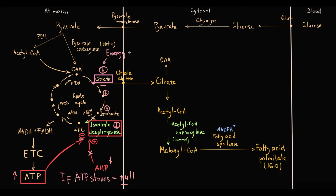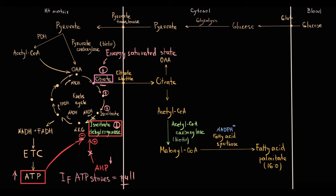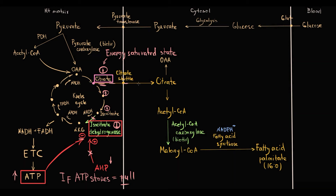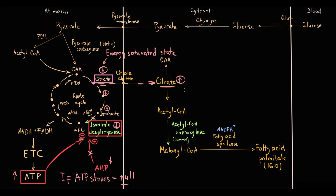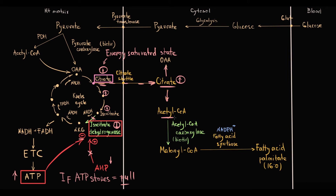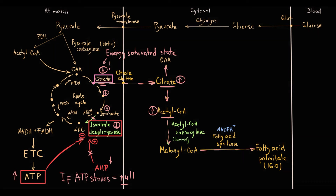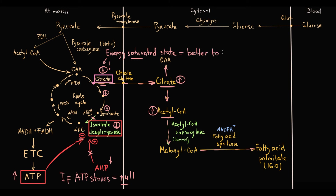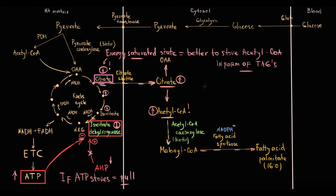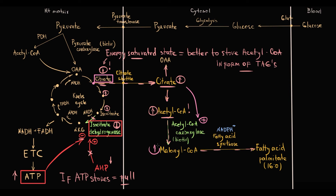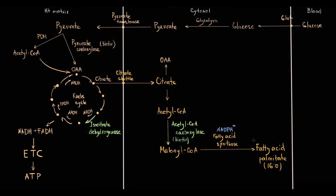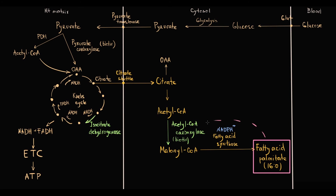High citrate level in the mitochondria is therefore a marker of the energy-saturated state. This accumulated citrate is transported through the citrate shuttle from mitochondria into the cytosol, where it is cleaved into oxaloacetate and acetyl-CoA, which is then used in fatty acid synthesis. Increasing citrate is essentially a sign that energy stores are full, so it is wiser to store acetyl-CoA as triacylglycerols. Therefore, citrate allosterically stimulates acetyl-CoA carboxylase, increasing fatty acid production. Acetyl-CoA carboxylase also has negative feedback regulation: the final product palmitoyl-CoA inhibits this enzyme.